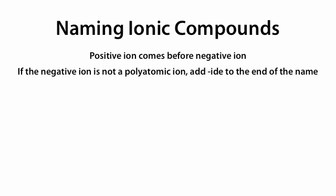Let's try another one: KNO3. KNO3 is composed from K+ and NO3-. K is potassium and NO3- is nitrate. We put the positive ion first, and the negative ion in this case is a polyatomic ion, so we don't need to do anything to its name. All together, this is called potassium nitrate.